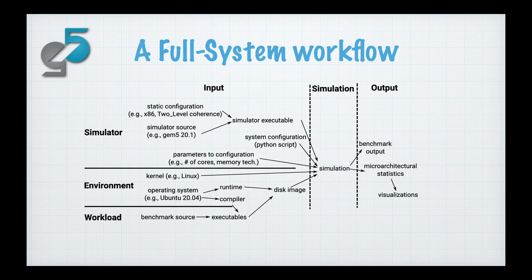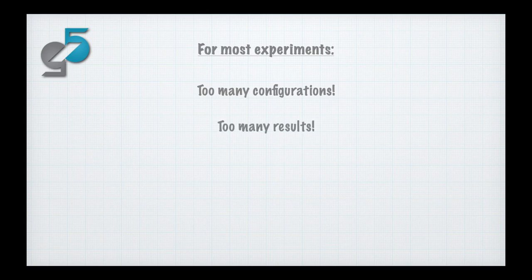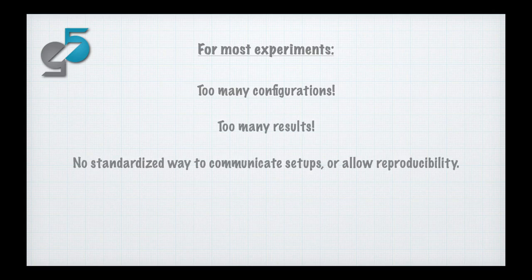You're going to get your GEM5 binary — which version did you use? Even with all this, once you've executed the simulation, you're going to have the benchmark output and a whole set of stats to go through. GEM5 provides hundreds of statistics to analyze after a typical execution. So just managing all this and logging it in a structured way is a huge effort. For most experiments, you simply have too many configurations and too many results. There's no standardized way to communicate these setups or allow for reproducibility.